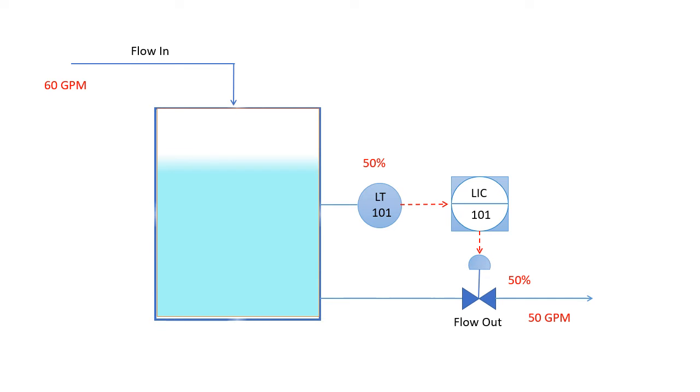Now if the controller gain is 2 percent, 1 percent increase in level would cause 2 percent increase in the valve opening because we know that proportional controller output is gain times error. So when there is a 1 percent increase in level, say 50 to 51 percent, the gain of 2 percent will be multiplied with the 1 and that will cause valve to open to 52 percent.